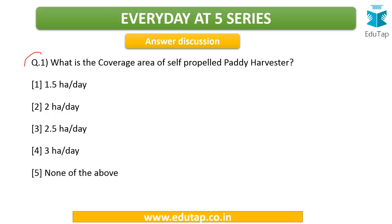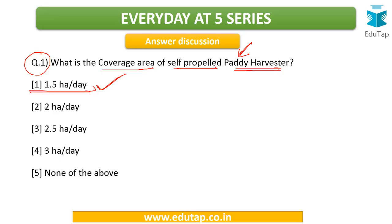The first question was: what is the coverage area of self-propelled paddy harvesters? There are various types of harvesters used once a crop has matured. The self-propelled paddy harvester is specifically used for rice, and the answer is 1.5 hectares per day. Always keep in mind — whenever you study a farm implement, look for its capacity or field capacity, as you can get a direct question from that value.